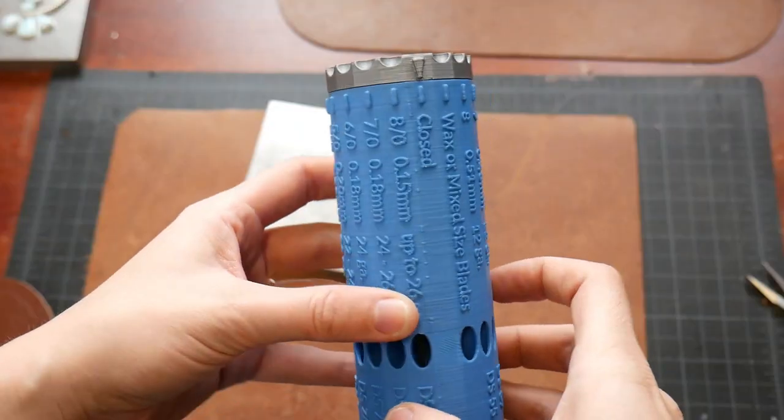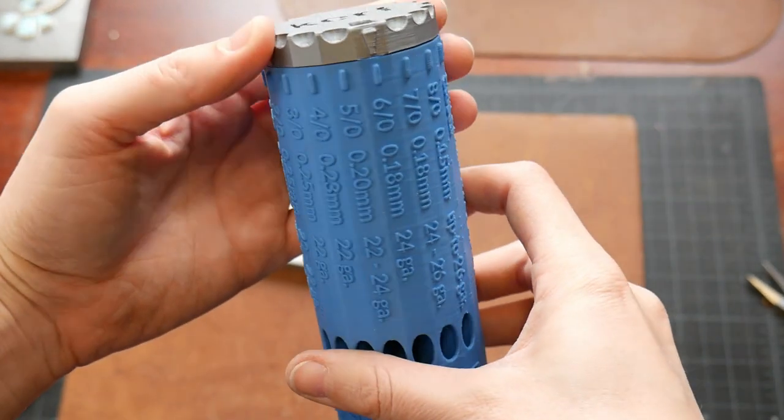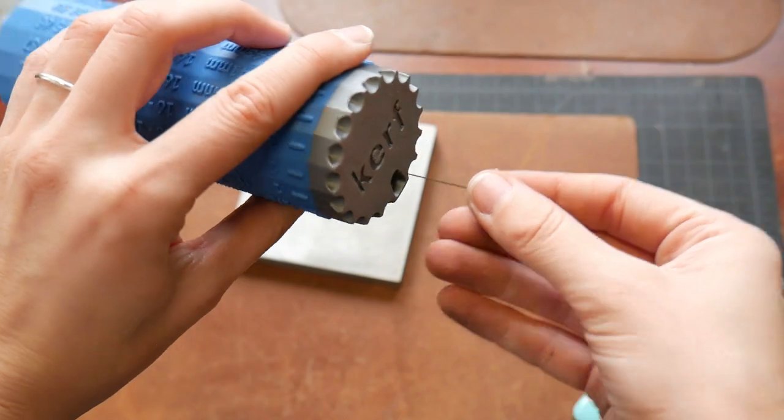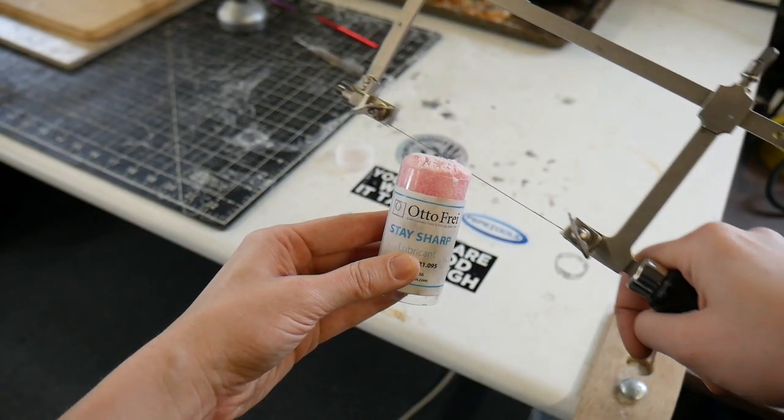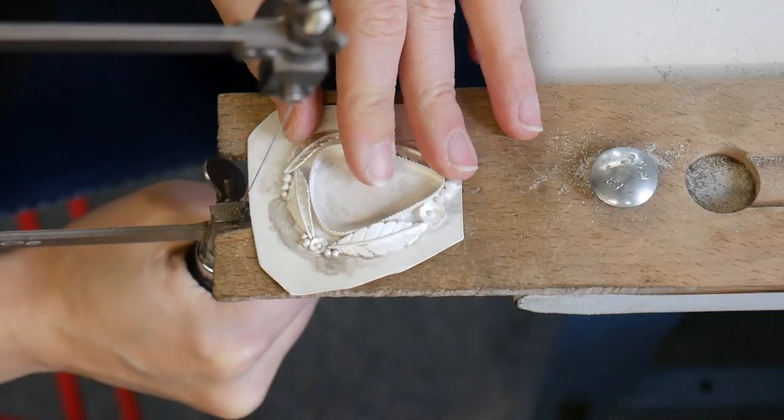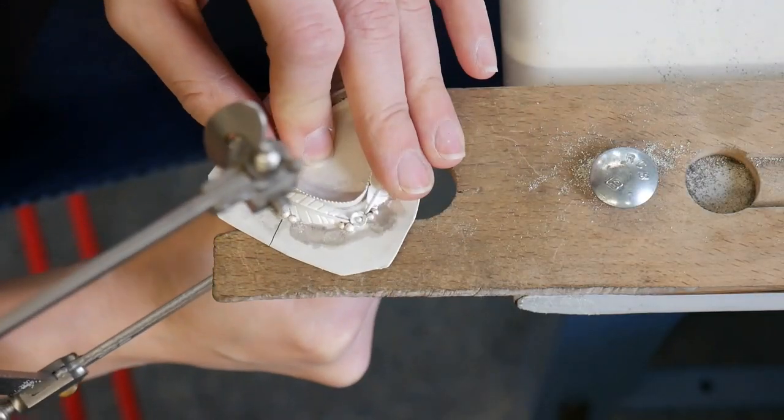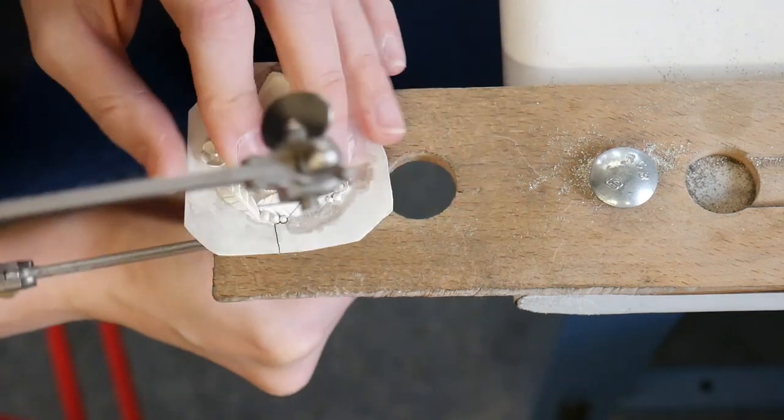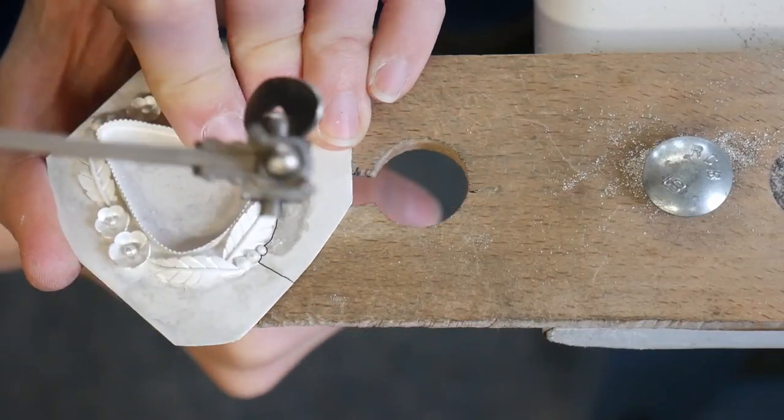Now I'm going to get ready to saw this piece out. I'm going to be using 5 Ott Nano Saw Blades from Pepe Tools to do this. Sawing out the piece can be quite tedious. I like to go as slow as I possibly can and try to get as close to the decorative elements. That way I have less cleanup to do at the end.